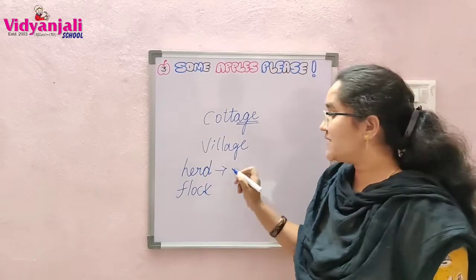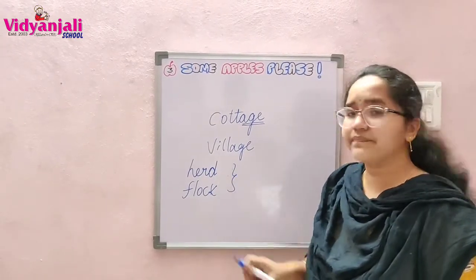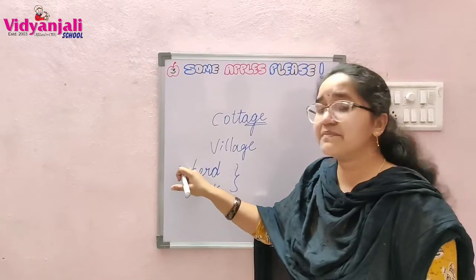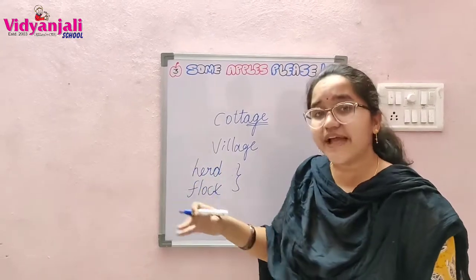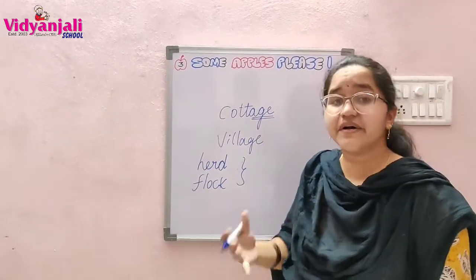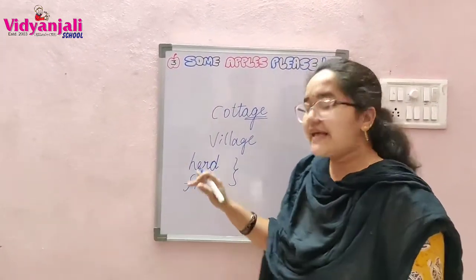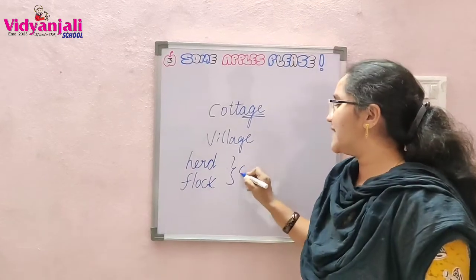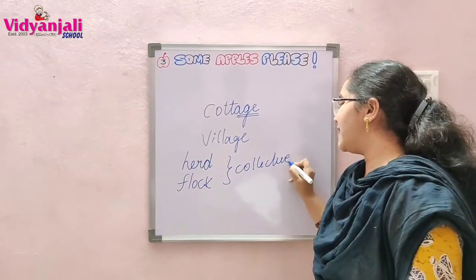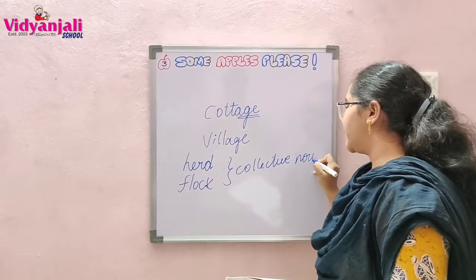What is the parts of speech of 'herd'? Herd of cattle — that means group of cattle. Flock of birds, flock of hens. That means collective noun. What is that? Collective noun means group.